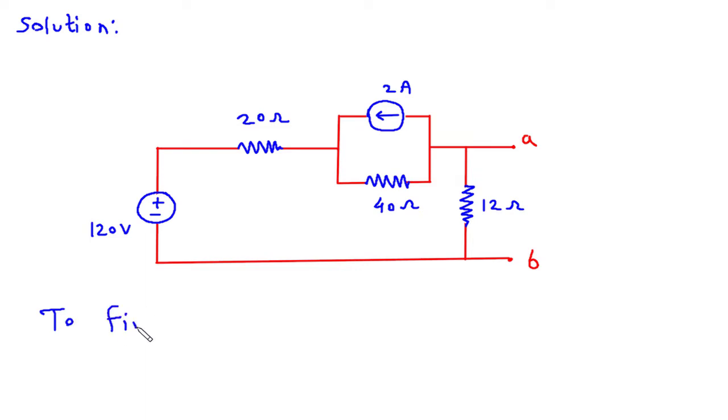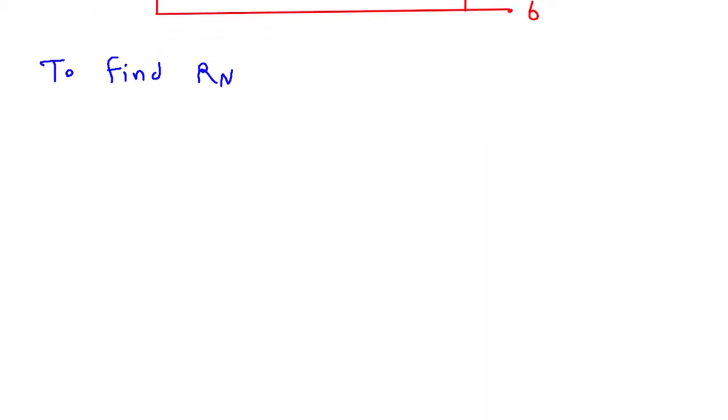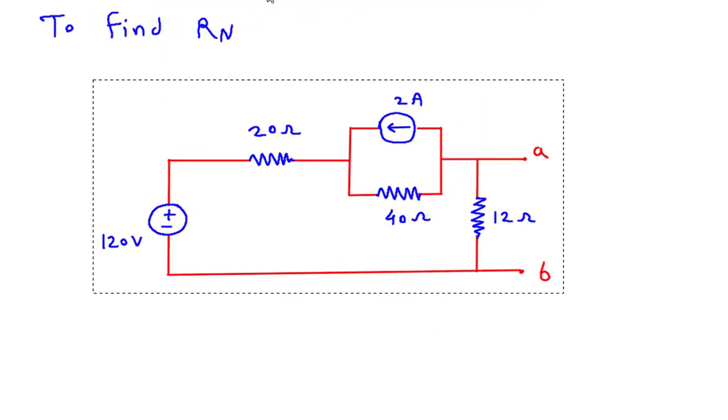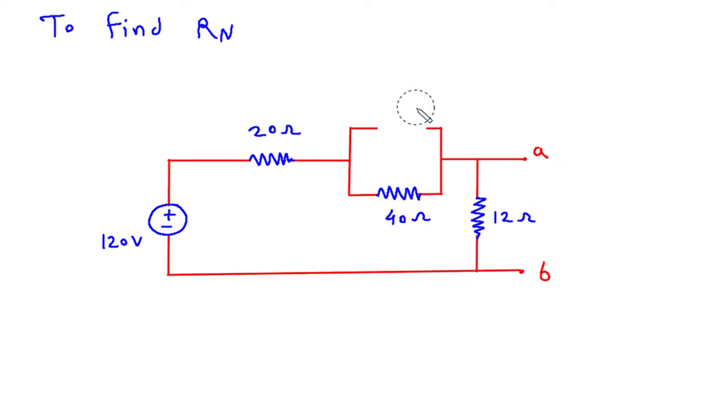To find RN we will open circuit current source and short circuit voltage source. So this will be open circuited and this will be short circuited. And this will be RN.